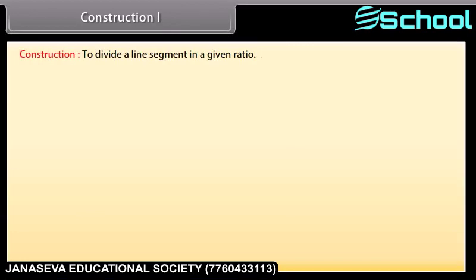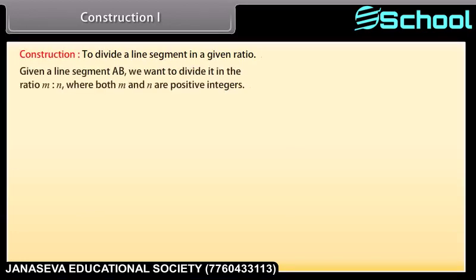To divide a line segment in a given ratio: given a line segment AB, we want to divide it in the ratio M is to N, where both M and N are positive integers. Let's take M as 4 and N as 2.